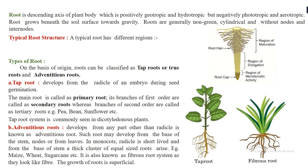Roots are negatively phototropic and aereotropic, meaning they do not grow towards light and do not grow towards the aerial part — they are always below the ground. So when we say positively geotropic and hydrotropic, the roots grow downward towards gravity; and negatively phototropic and aereotropic means they stay underground.